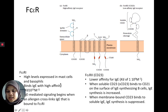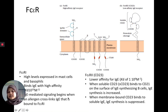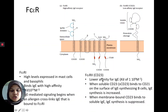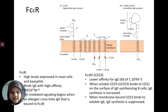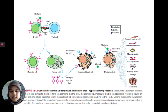The type 1 receptor is expressed at high levels in mast cells and basophils and binds IgE with high affinity. IgE-mediated signaling begins when the allergen crosslinks IgE that is bound to these receptors. The type 2 receptor has lower affinity for IgE; when soluble CD23 binds to the surface of IgE-synthesizing B cells, IgE synthesis is increased, but when it's bound to soluble IgE, IgE synthesis is suppressed.